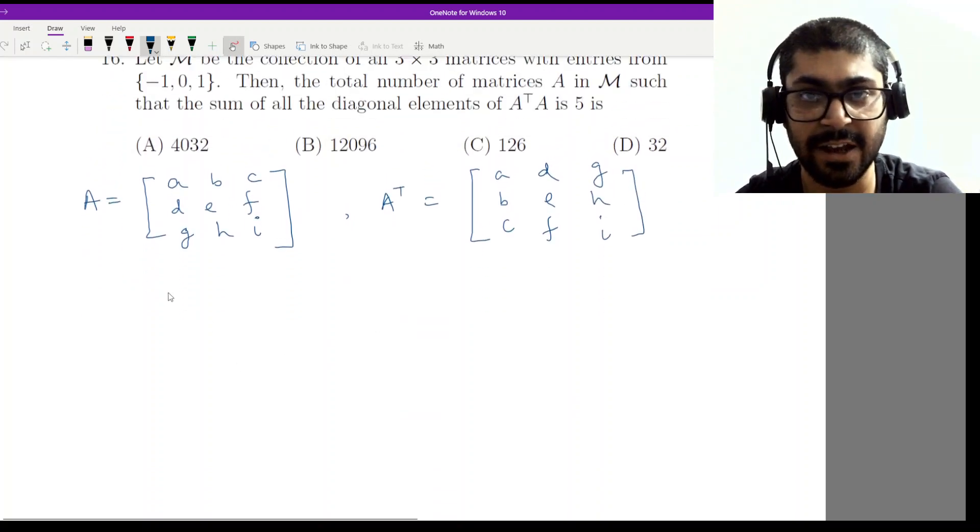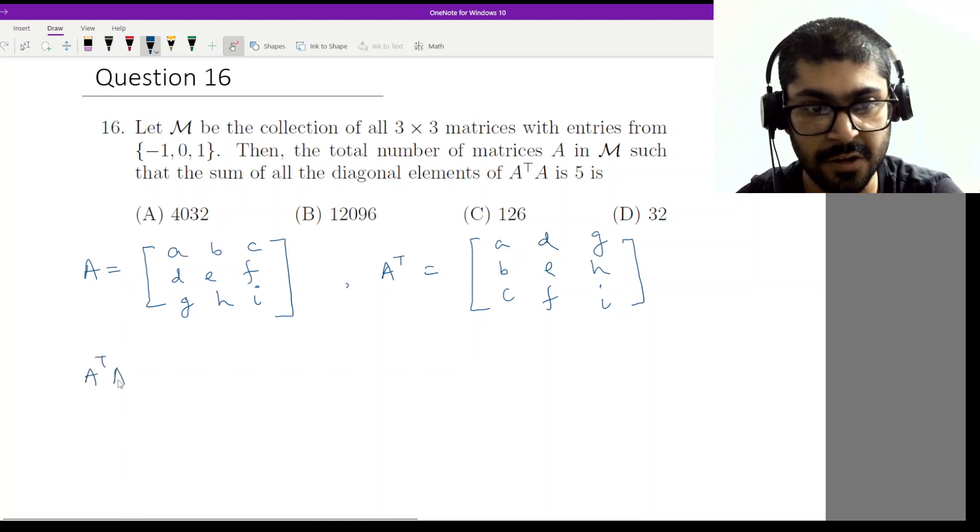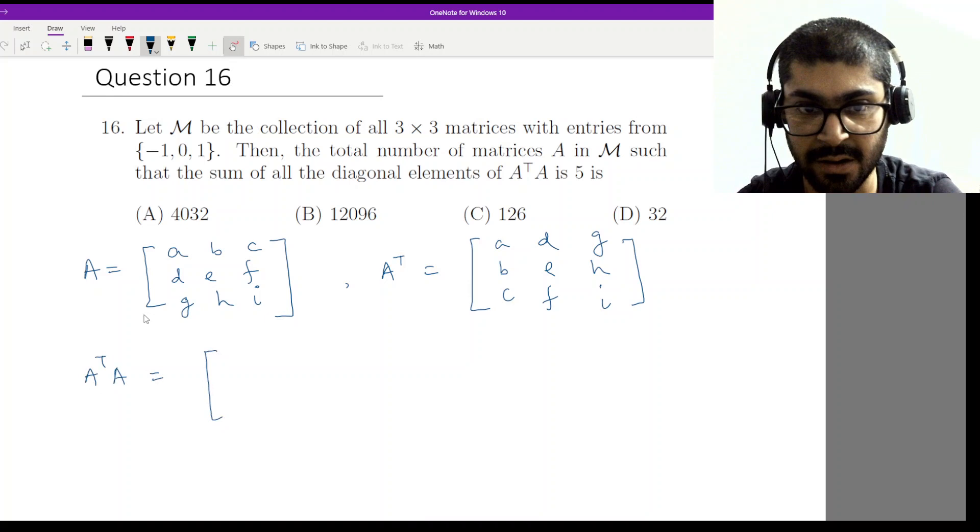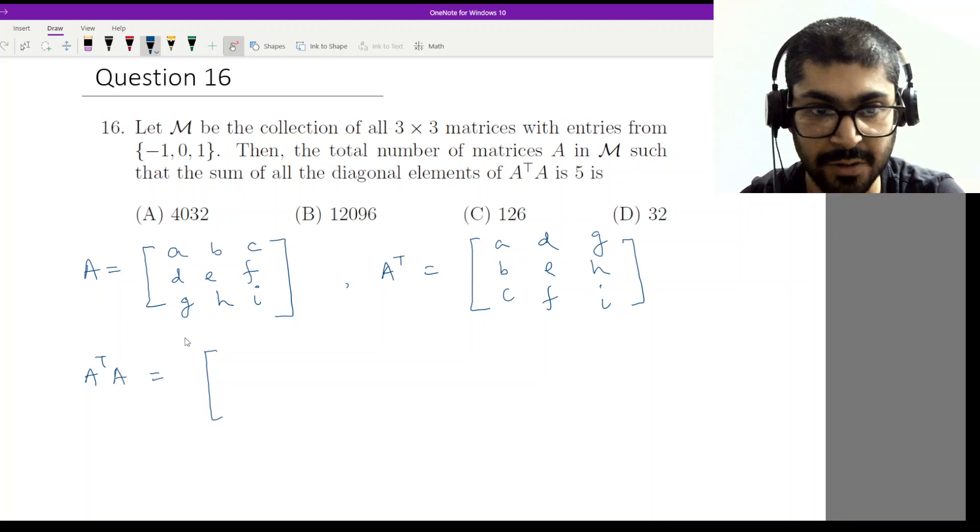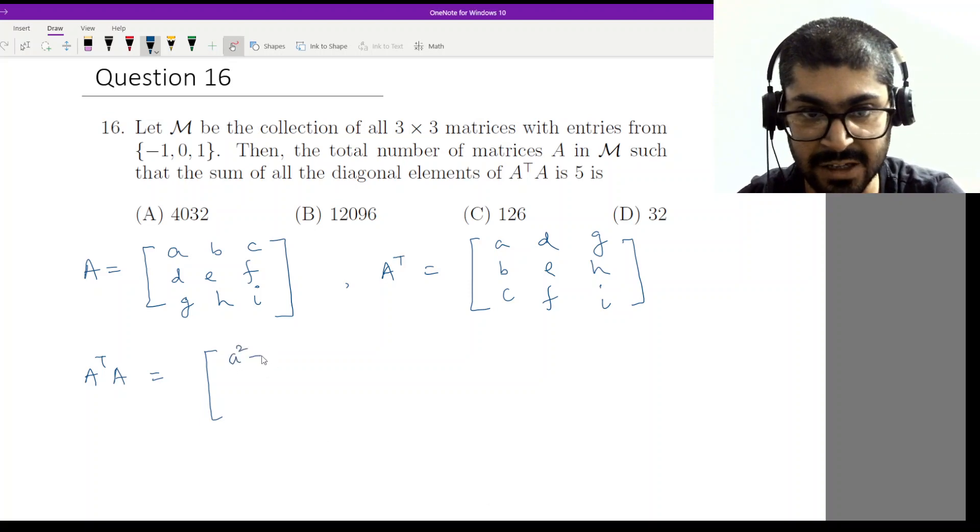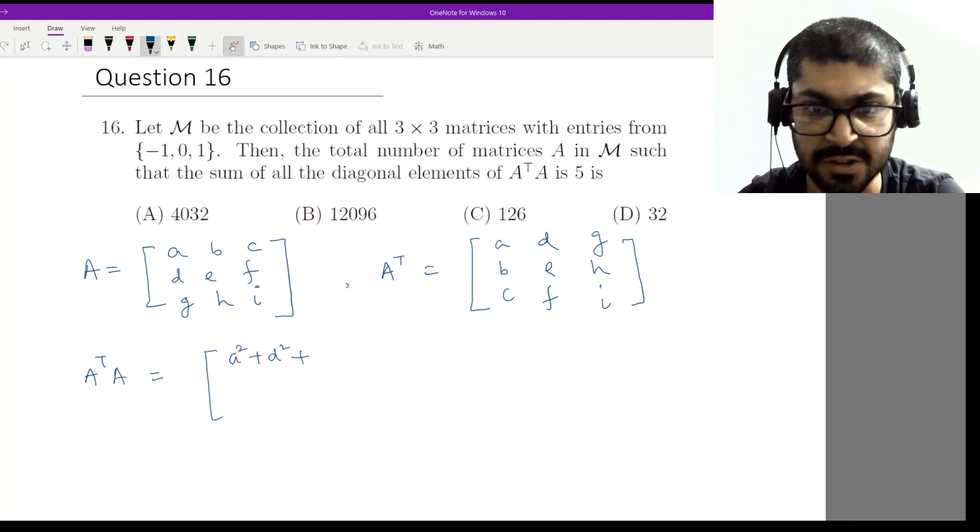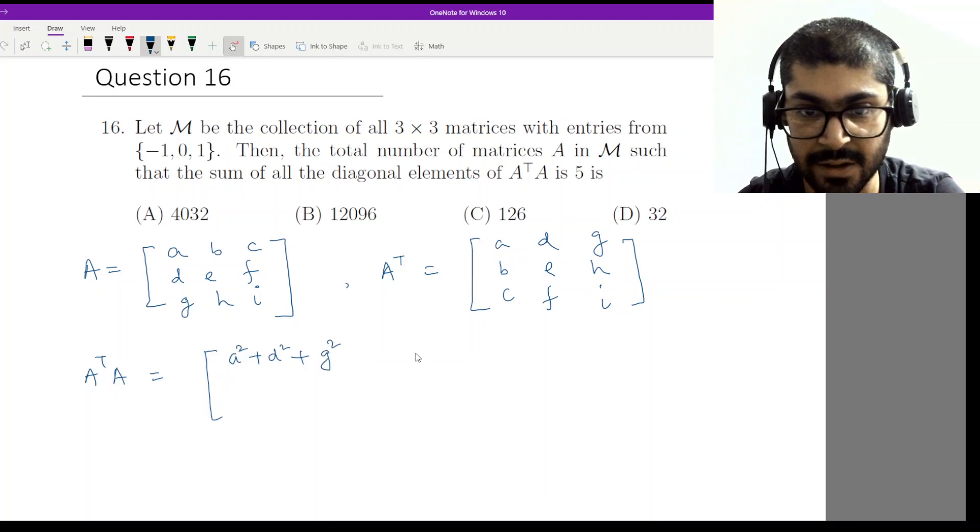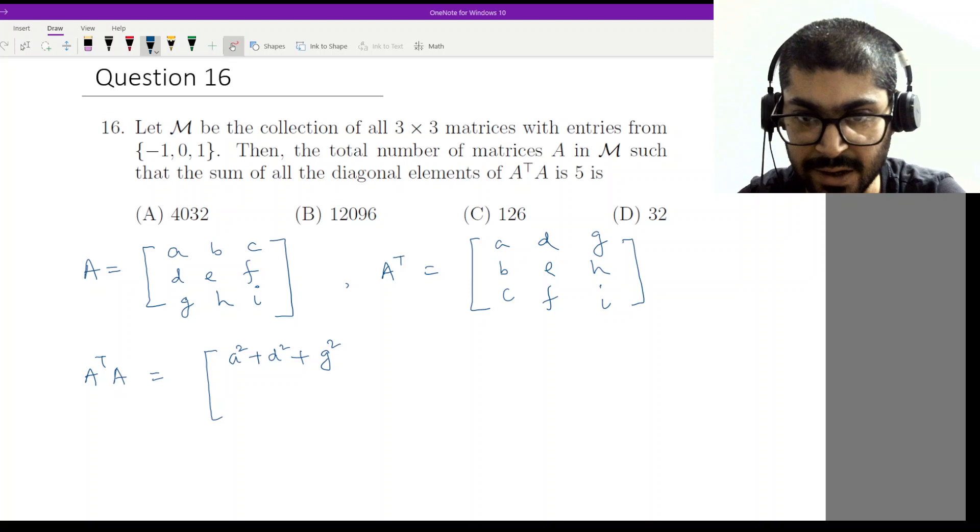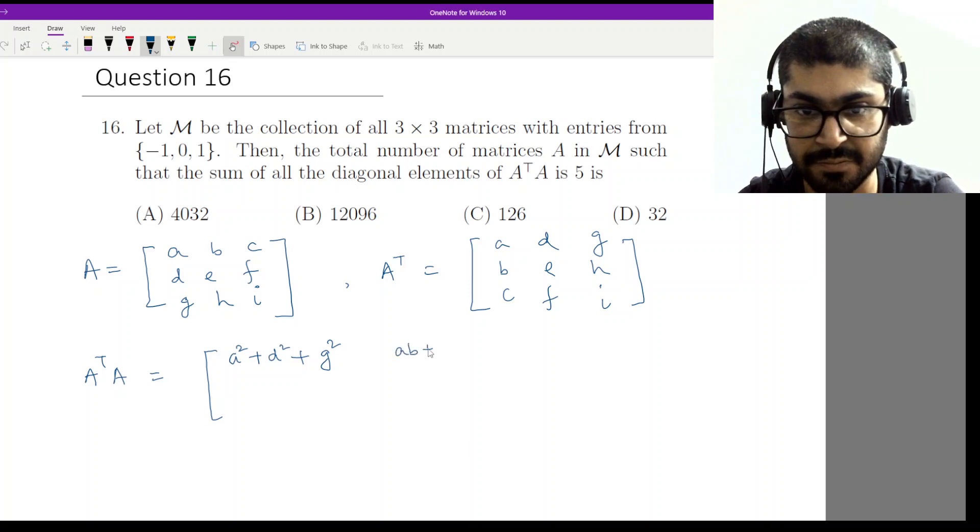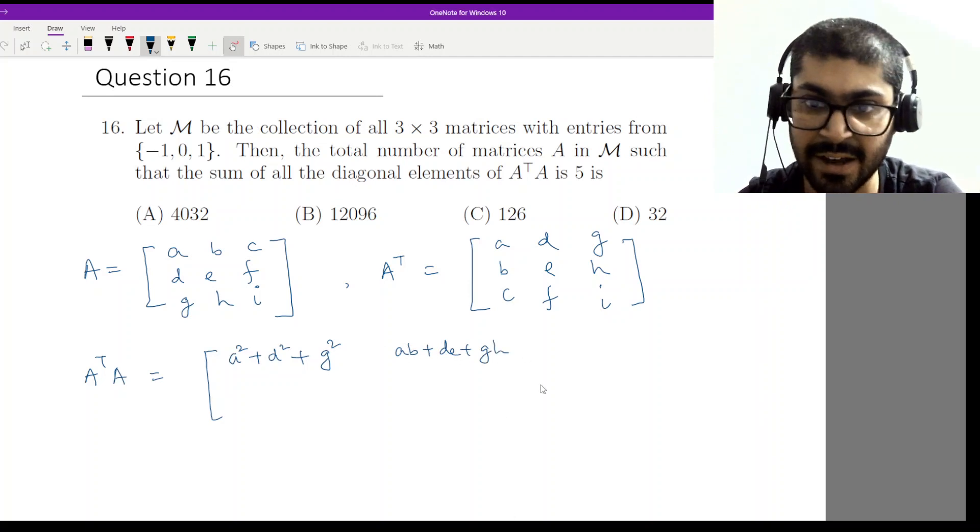Now let us check A transpose into A. If you do the multiplications, you will have a squared, then b squared, then c squared. So all of the squares will be there in the diagonals. You will have a squared plus d squared plus g squared, then you will have ab, de, and gh, and then at the end you will have ac, df, and gi.